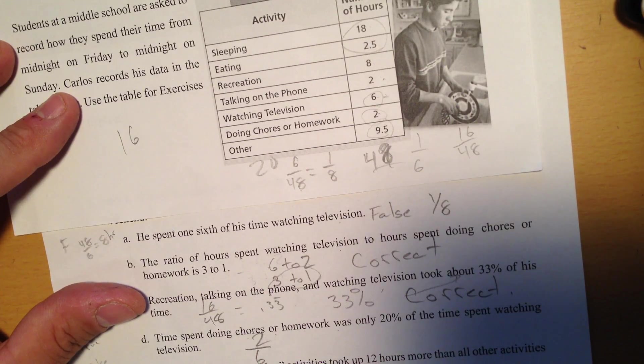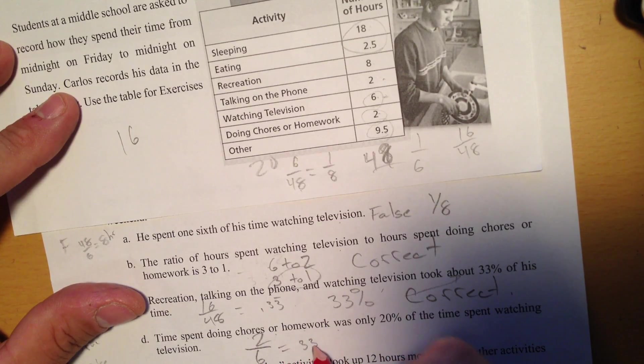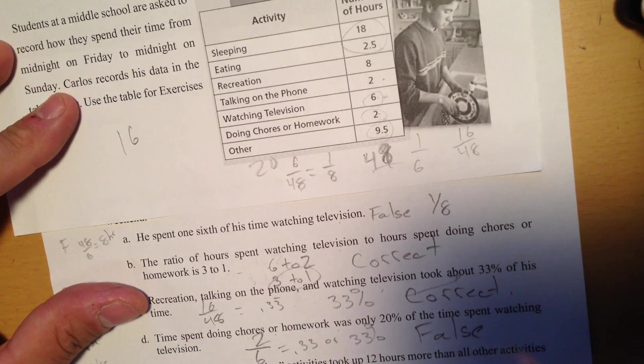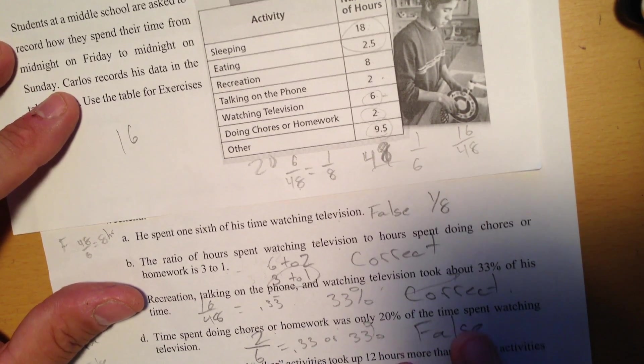So if I want to find a percent, I'm going to take 2 divided by 6, and I get .33 or 33%. So that's false. It's actually more than that, it's 33%.